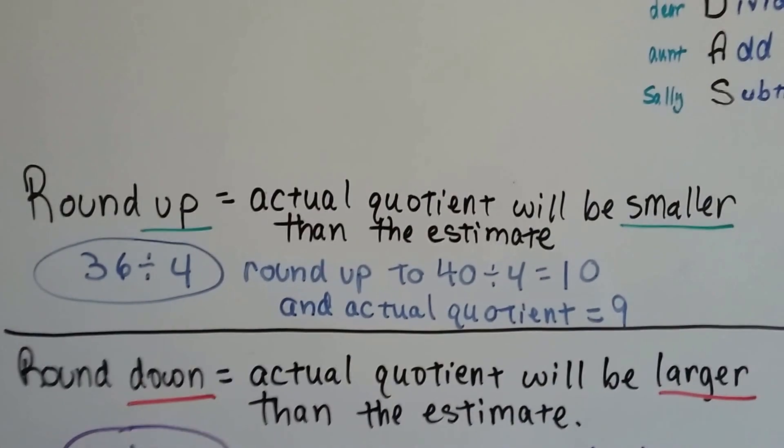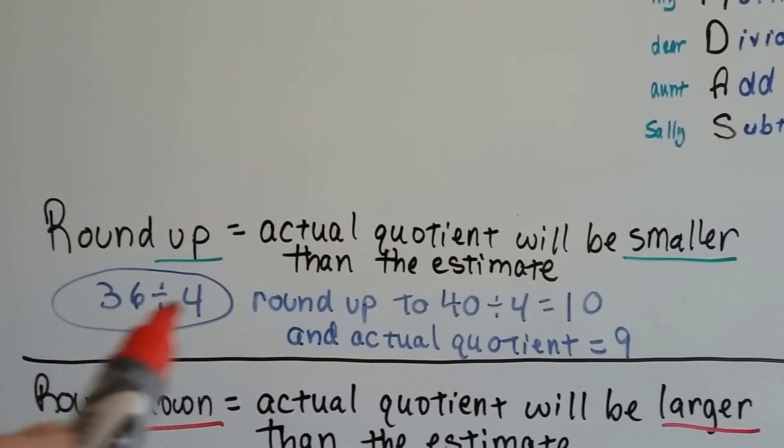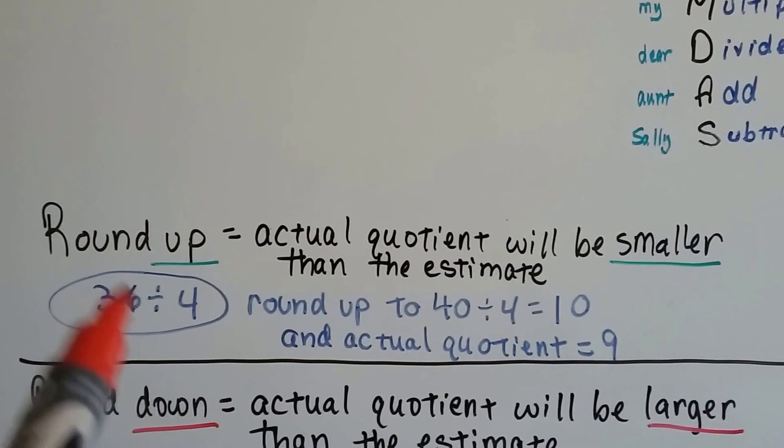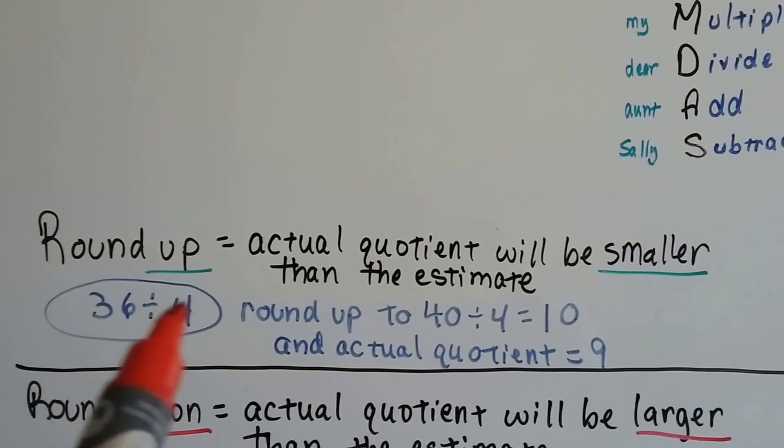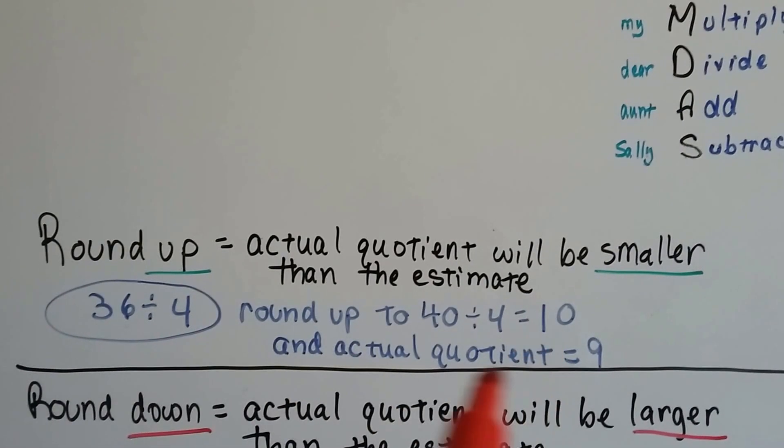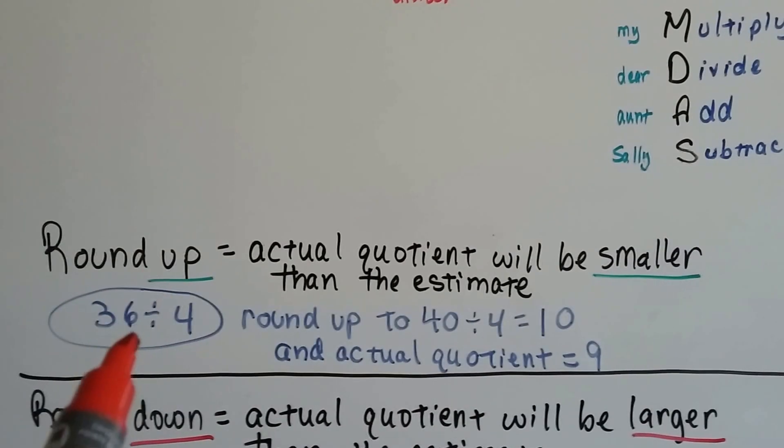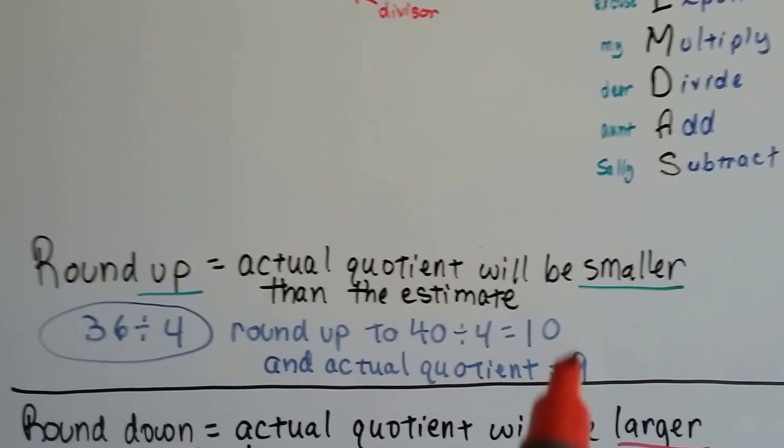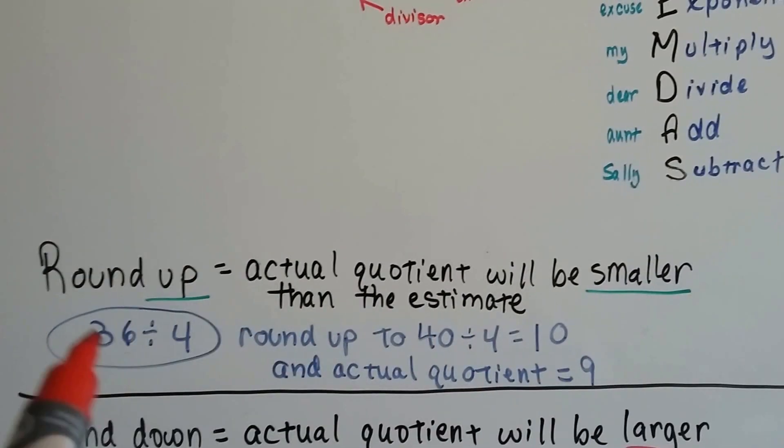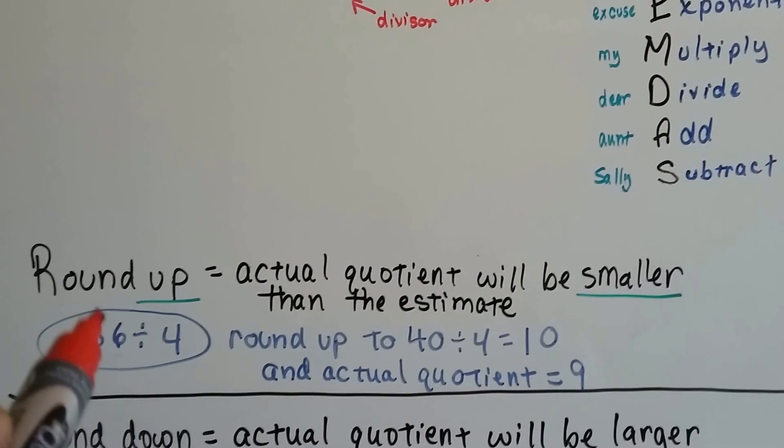What am I talking about? Well, we know that thirty-six divided by four is nine. That's part of the four times table. If we round this up to forty, forty divided by four would be ten, where the actual quotient is nine. By rounding up, the actual answer is smaller because we made this bigger. We divided it into bigger pieces.